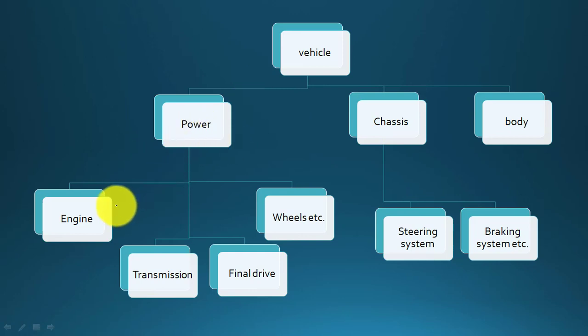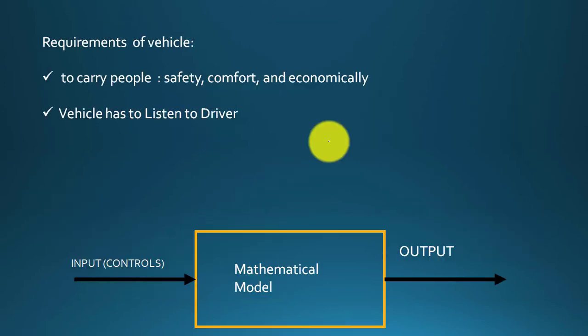The power module can be further classified into the systems affecting vehicle dynamics: the engine, the transmission system, the final drive, and the wheels. Likewise, the chassis (JC) module can be classified into two groups: the steering module and the braking system. The third major classification is the body module.